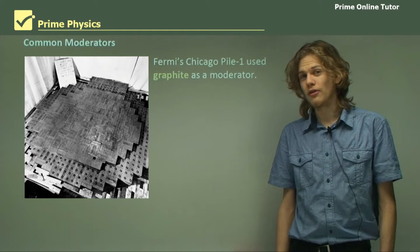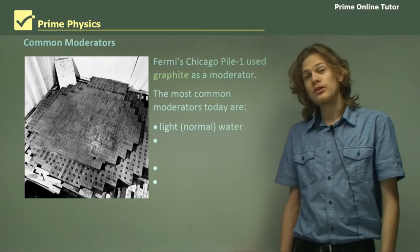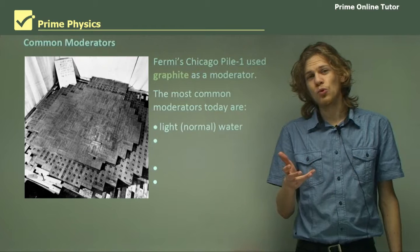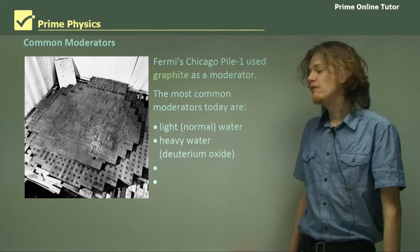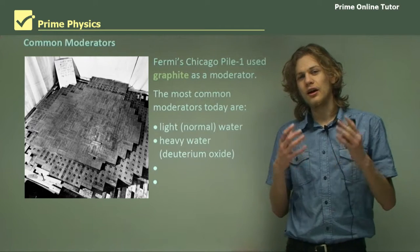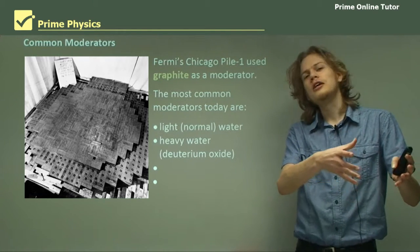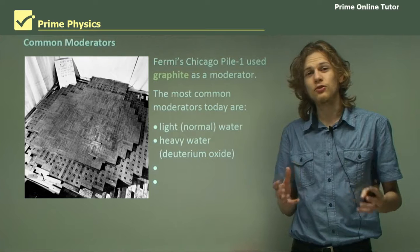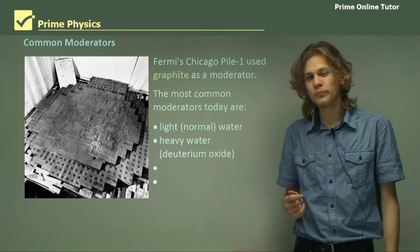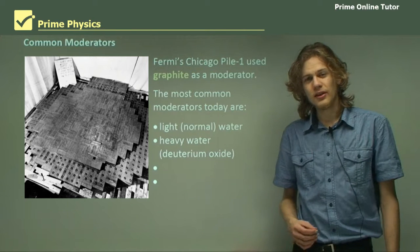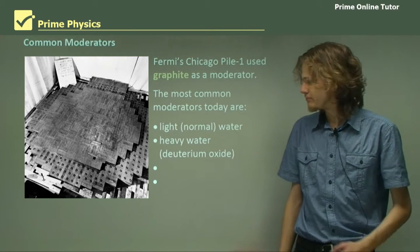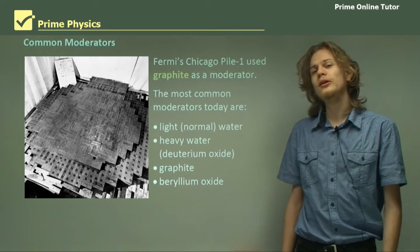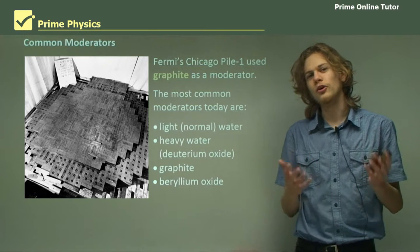Not all modern reactors use graphite. Some of the moderators used today are normal water, sometimes called light water — named to distinguish it from heavy water. Heavy water is water in which all the hydrogen has been replaced with deuterium, an isotope of hydrogen with an atomic mass of two — one proton, one neutron. Heavy water is a better moderator than light water, but it's harder to come by. Graphite is still used in some reactors, and finally beryllium oxide is also able to behave as a moderator.